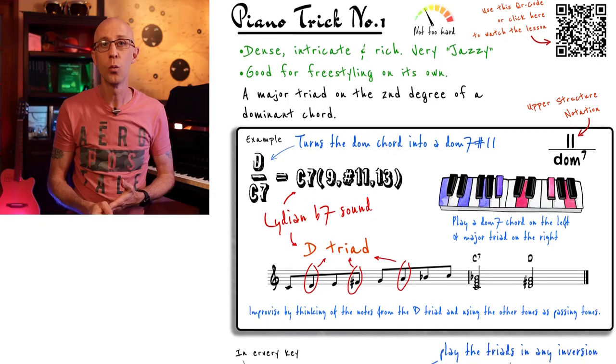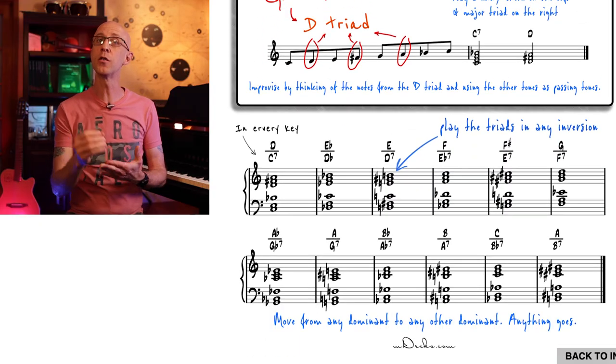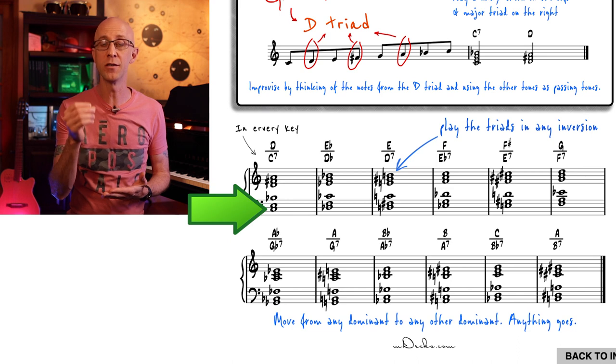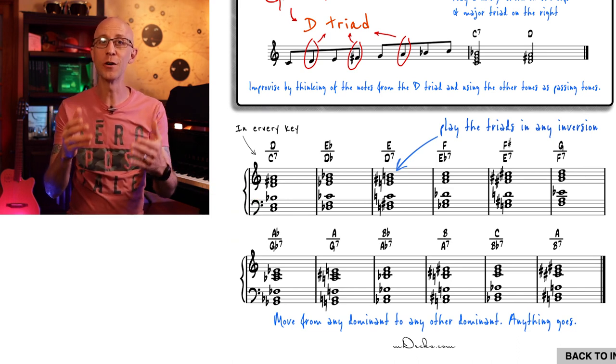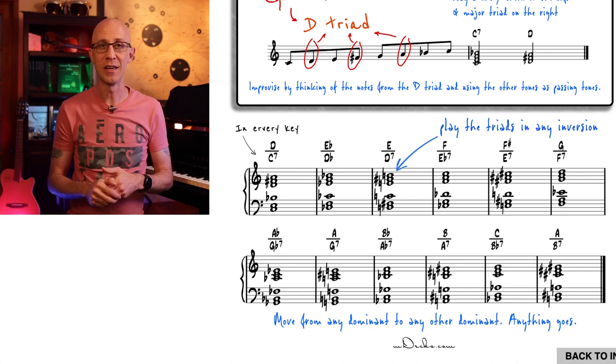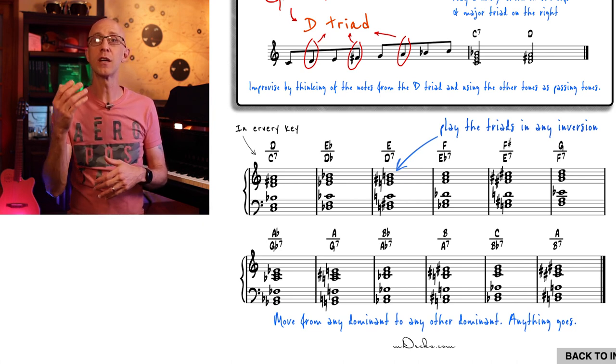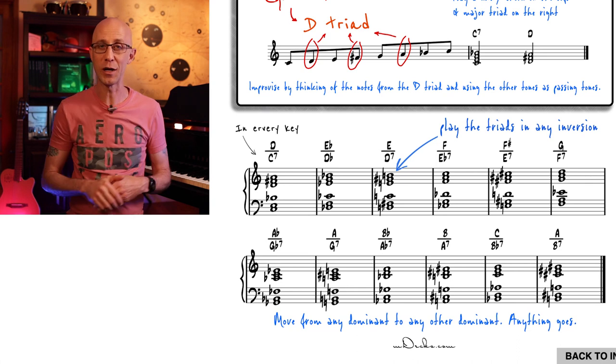So the first thing I want to point out is the way that we're voicing the dominant chord on the left hand, which is only playing three notes: the root and the two guide tones, the three and the flat seven. We're showing this voicing on the music notation at the bottom of the lesson's notes. But I think we can take a much deeper, more advanced look into this left hand voicing and how a simple evolution of it can drastically change the way that you use this trick.